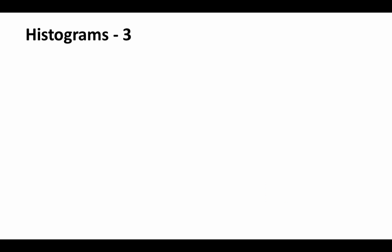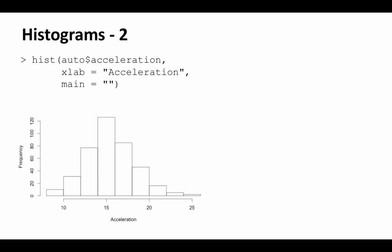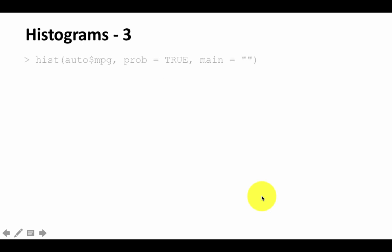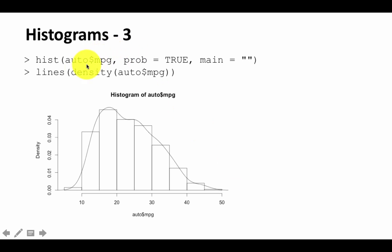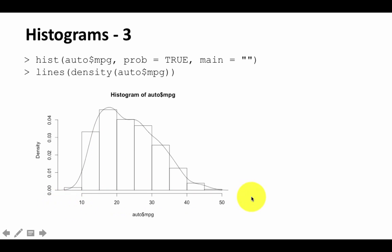Instead of plotting frequencies on the y-axis, you can ask it to plot proportions. You can say hist(auto$mpg, prob=TRUE). Notice now the y-axis shows density — it's showing the frequency count divided by the total, or the proportion of cases that fall into each bin.